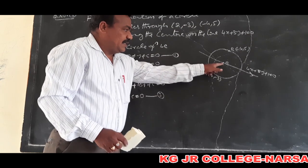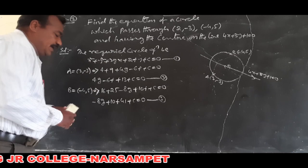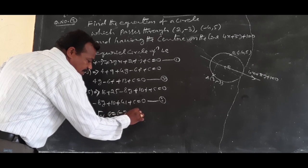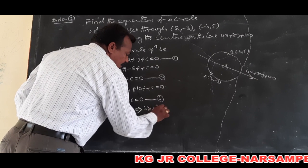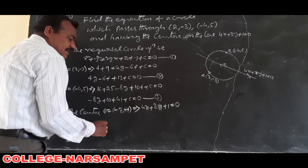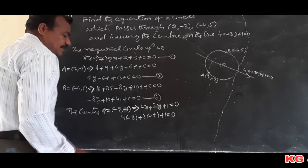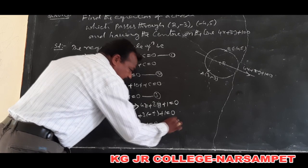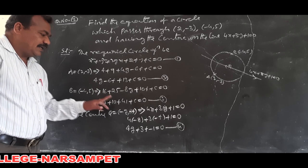The center of the circle in general form has coordinates (-g, -f). This center lies on the given line 4x + 3y + 1 = 0. Put x = -g and y = -f: 4(-g) + 3(-f) + 1 = 0, giving -4g - 3f + 1 = 0. This is the third relation. So we have three equations to solve for g, f, and c.